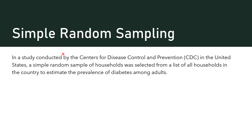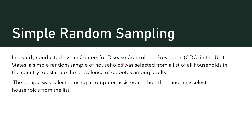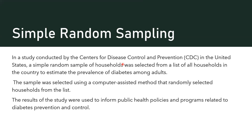Here's a use case: in a study conducted by the CDC in the United States, they used a simple random sample to study the prevalence of diabetes among adults. They had a large data repository with a stored list of households, and used a computer-assisted method — a random number generator — to select from that list. They could then use the results to talk about diabetes prevention and control based on where the higher prevalence of diabetes ended up being.